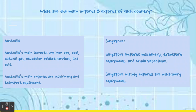The main imports of Singapore are machinery, transport equipment, and crude petroleum. Singapore mostly exports machinery equipment. Singapore mostly imports from mainland China, and mostly exports to the United States, Indonesia, Malaysia, and Japan.